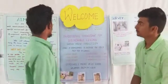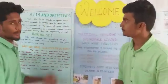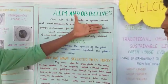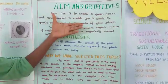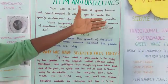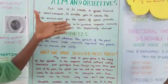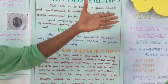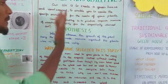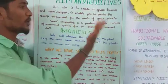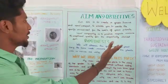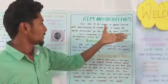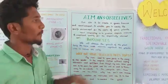Now we go to the project Aim and Objectives. Our aim is to create a greenhouse and vermicompost to enable a specific environment for the needs of your plants. Vermicomposting is to produce organic manure of exceptional quality for organically starved soil.